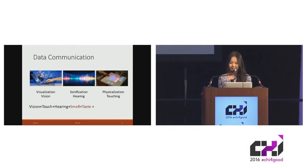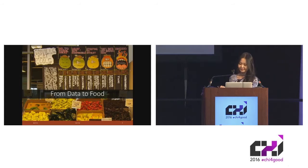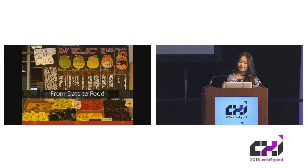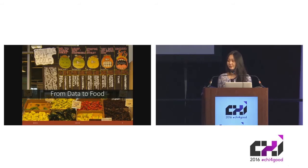Therefore, we propose the concept of data edibilization, which uses different attributes of edible materials. For example, different types of peppers with different colors and shapes can be used to present categorical data, while the intensity of spicy taste measured by the Scoville heat scale can be used to present continuous data.